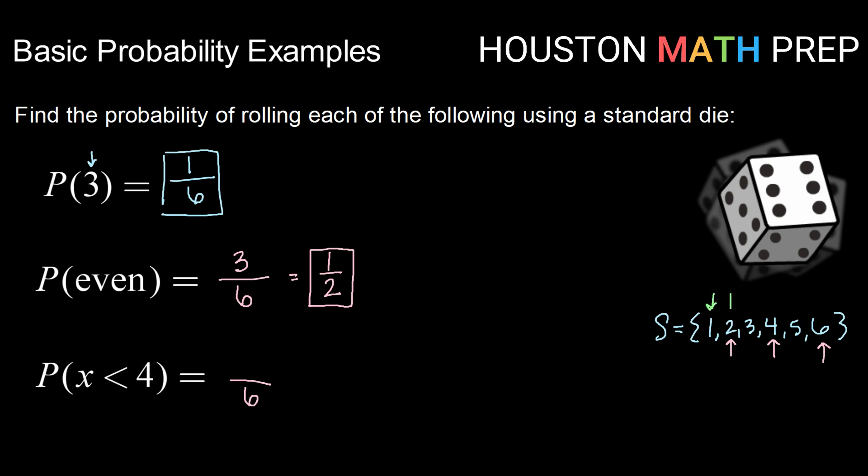Well, one is less than four, two is less than four, and three is less than four. So we have one, two, three outcomes. So three over six, again, reduces to one-half. So the probability of rolling a value less than four is one-half.